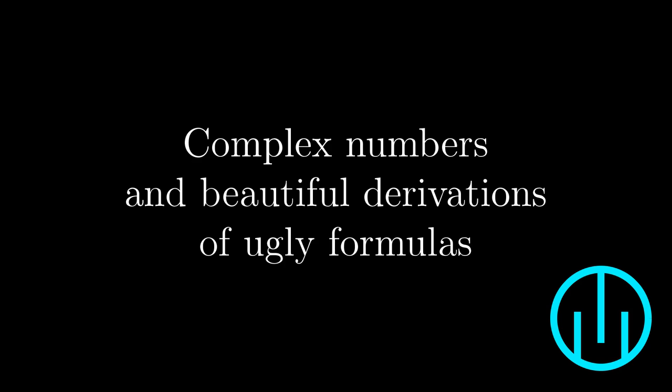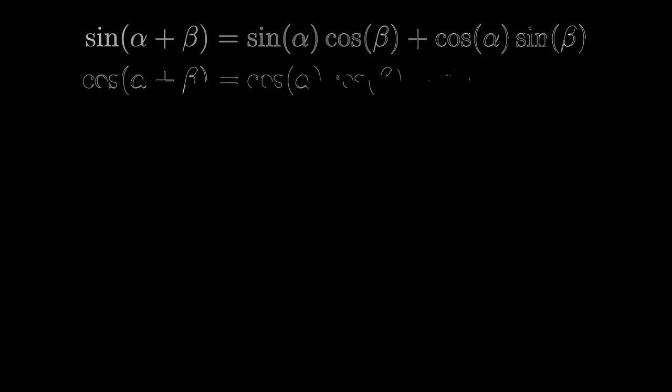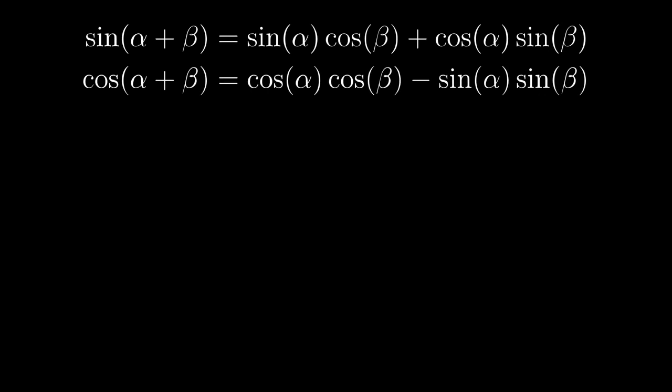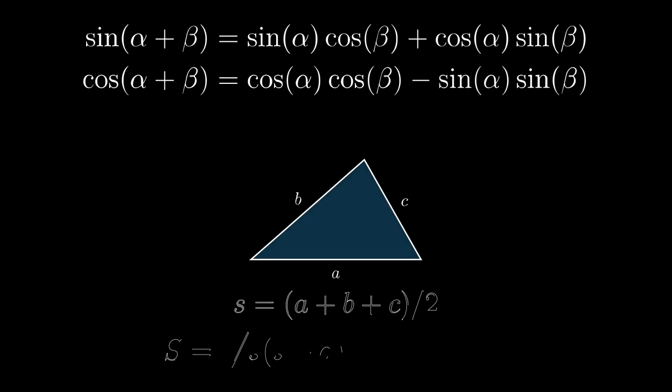Hi, I am Mirek Olszak and today we are going to derive two formulas which may look hideous at first glance. The first of them is the angle sum identity for basic trigonometric functions sine and cosine. And the second is a Heron's formula for computing the area of a triangle from the lengths of its sides.